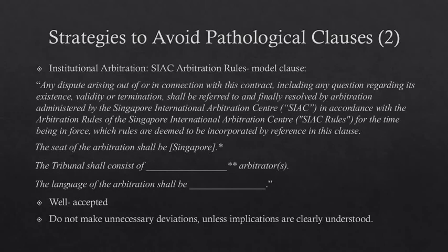If you want an arbitral institution to manage your arbitration and have decided on one, use the model clause available on the institution's website. For example, if you choose the Singapore International Arbitration Centre, use its model clause. SIAC's Model Arbitration Clause reads: 'Any dispute arising out of or in connection with this contract, including any question regarding its existence, validity or termination, shall be referred to and finally resolved by arbitration administered by the Singapore International Arbitration Centre (SIAC) in accordance with the Arbitration Rules of the Singapore International Arbitration Centre (SIAC Rules) for the time being in force, which rules are deemed to be incorporated by reference in this clause. The seat of arbitration shall be [blank]. The tribunal shall consist of [blank] arbitrators. The language of the arbitration shall be [blank].'